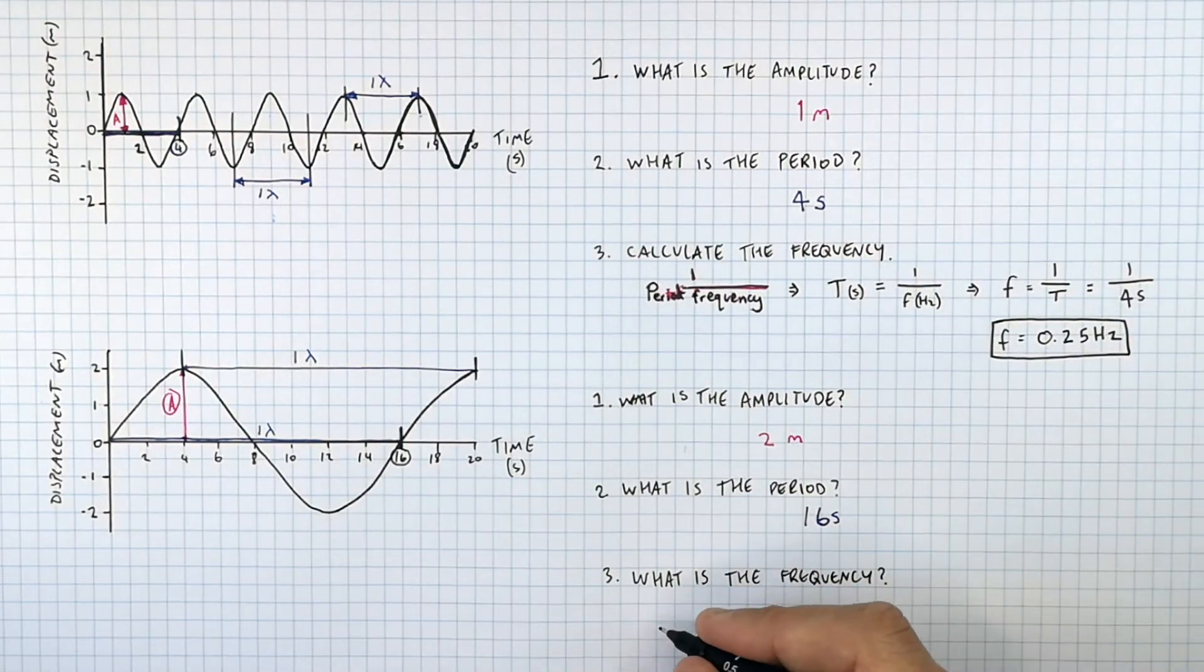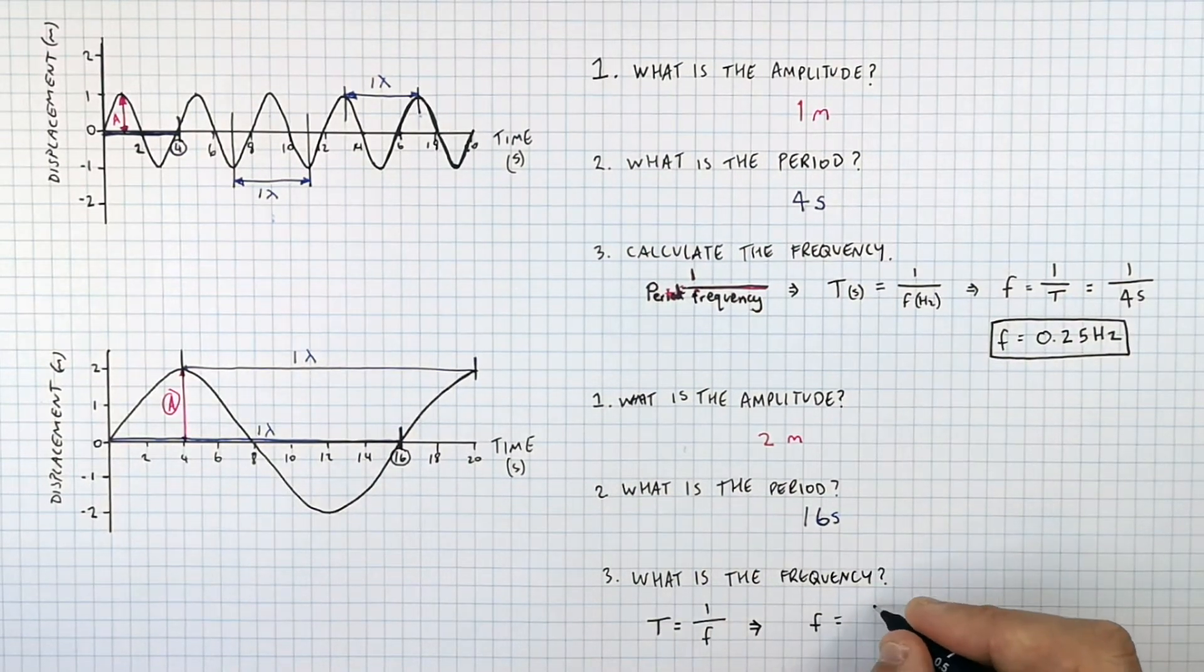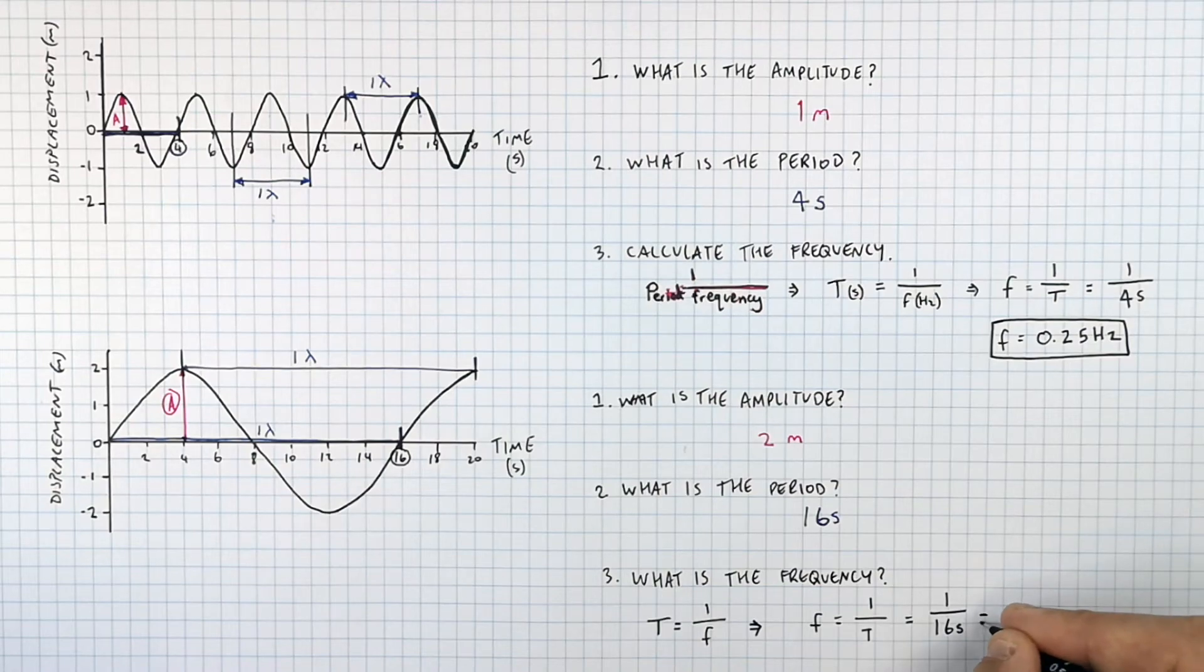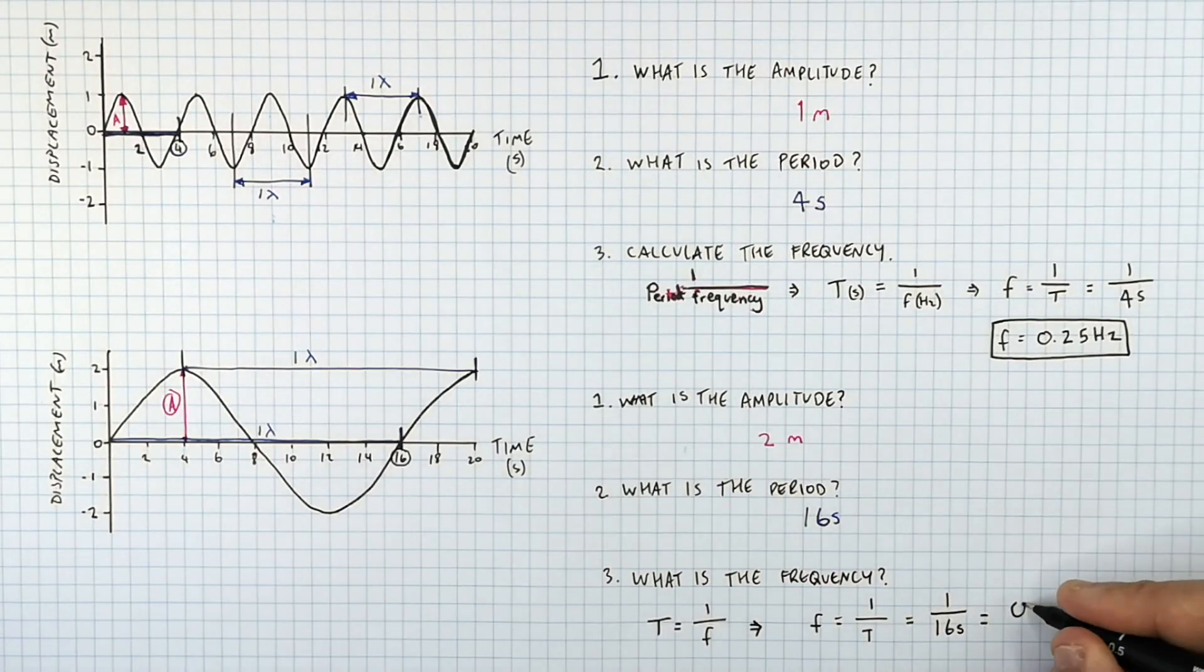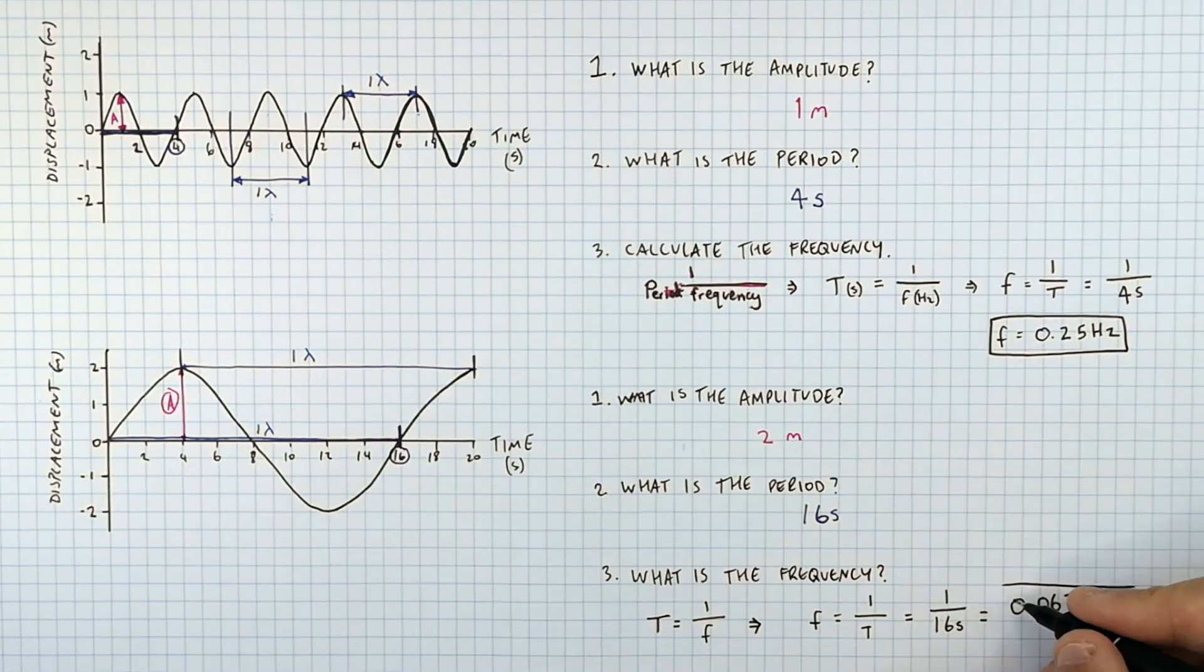So to calculate the frequency, you recall T equals one over F. You rearrange for F, which is going to be F equals one over T. So F equals one over T is going to be one divided by the period 16 seconds, which gives you a frequency of 0.0625 hertz.